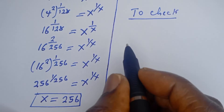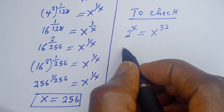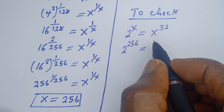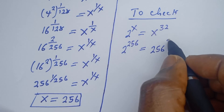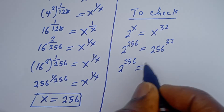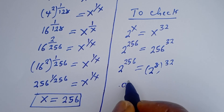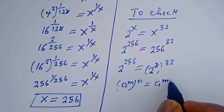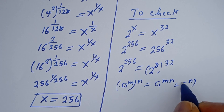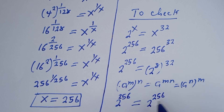Let's check. We have the given equation: 2 to the power of S is equal to S to the power of 32. When S is equal to 256, this is 2 to the power of 256 must equal 256 to the power of 32. Now, 2 to the power of 256 can be written as 2 to the power of 8 to the power of 32. Using the rule that A to the power of M to the power of N equals A to the power of N to the power of M, we get 2 to the power of 256, which equals 256. So the left-hand side equals the right-hand side, which is true at S equal to 256.